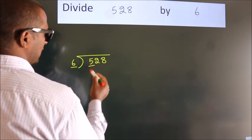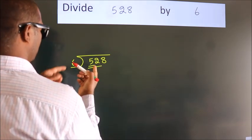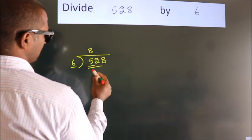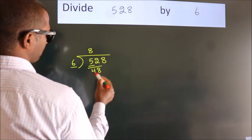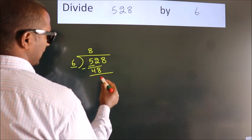So we should take two numbers, 52. A number close to 52 in the 6 table is 6 times 8, 48. Now we should subtract. We get 4.